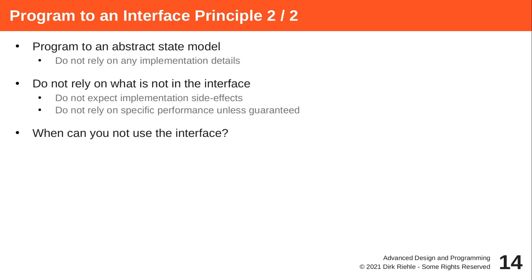The goal is to make your code more easily changeable and maintainable. If you program to the interface, you rely on the abstract state model, which is what the programmer of the class wants you to rely on. They can then change — in subclasses or later versions — how they implement the abstract state model through implementation state, by changing fields, without breaking your client code.